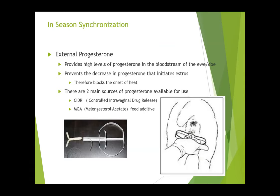Our second choice for in-season synchronization is to give them some sort of external progesterone source. If you put progesterone into their bloodstream from an outside source like a CIDR, what happens is as long as they're absorbing progesterone from the CIDR, they won't come into heat because it blocks progression on the ovary — it sits there like having a CL that won't go away. When you remove that source of progesterone, the progesterone drops just like it would naturally and the animal will come into heat from the drop in progesterone.